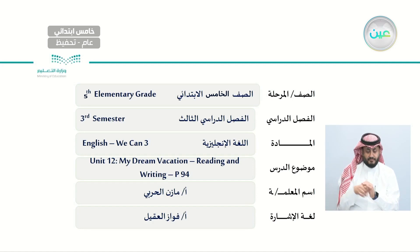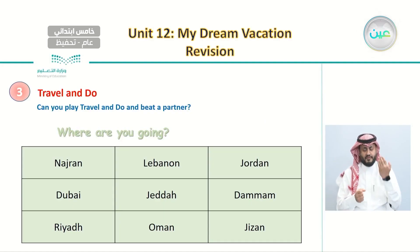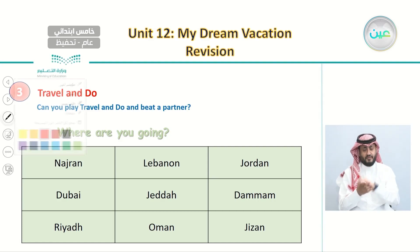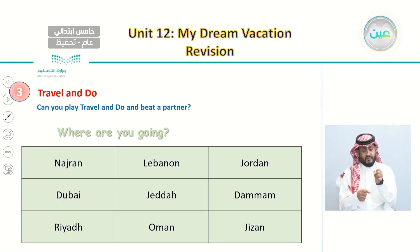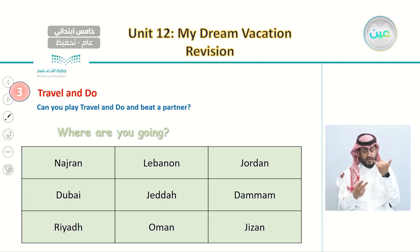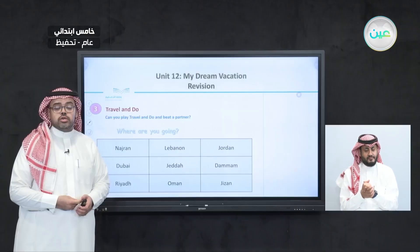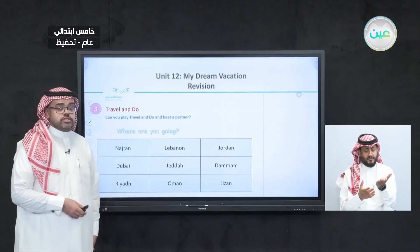Let's begin with a quick revision from our last lesson. In our last lesson we covered the grammar, and with Travel and Do, we said let's play the game called Travel and Do to try to beat a partner. In order to play this game we have two important questions to answer. The first one is: where are you going? So here, how we play this game is to choose an answer from this table.